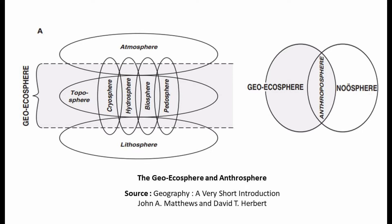The Geoecosphere given by Matthews and Herbert consists of a total of seven spheres that we study in the subject of geography. Matthews and Herbert define it as: 'The narrow surface zone comprising all the landscapes of the Earth, helpful in defining the overall scope of physical geography, can be termed as a Geoecosphere.' Landscape is the core concept of geography, and all landscapes are included in this narrow surface zone.